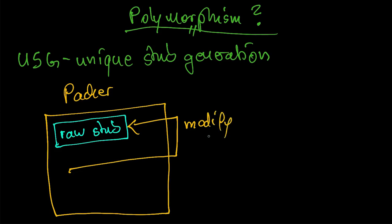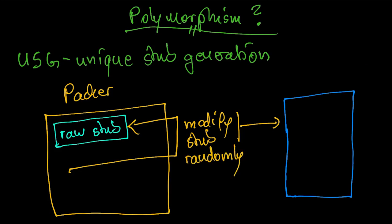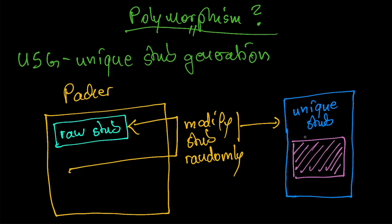That means the packer has a raw stub or stub pieces that it modifies into millions of possible variants to create a unique stub for every packed file. Such modification can, for instance, be achieved by taking the raw stub source, shuffling instructions where the order does not matter, including junk instructions in random places, and compiling the stub. The main difference to binary padding is that USG evades antivirus pattern detection.